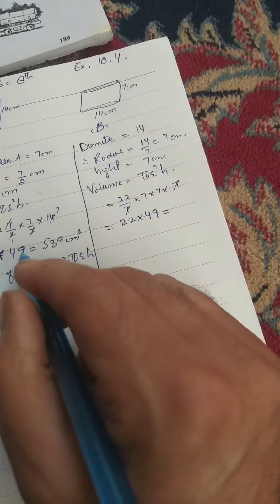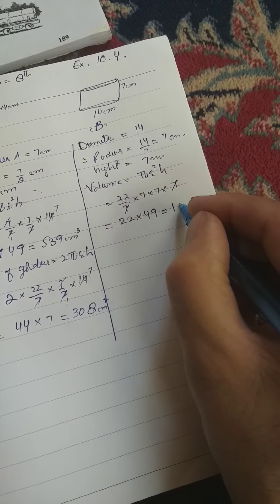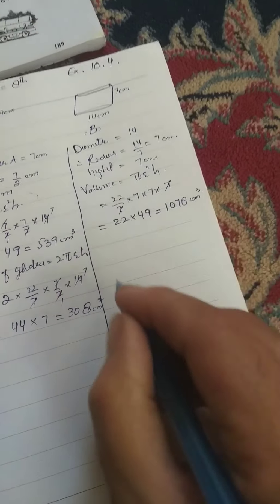Because it is 11 into 49, it is 22 into 49. It is equal to 1078 cubic centimeter.